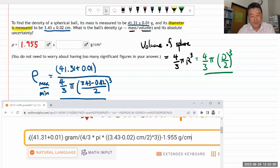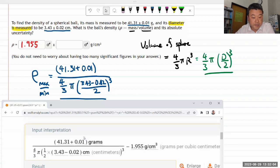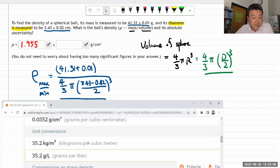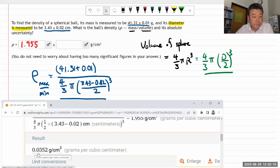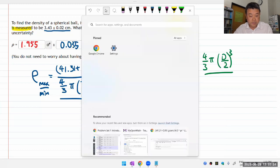When it does the calculation, make sure it interpreted your input correctly. The answer here is 0.035 g/cm³. Let's plug that in and see if it says that's correct.